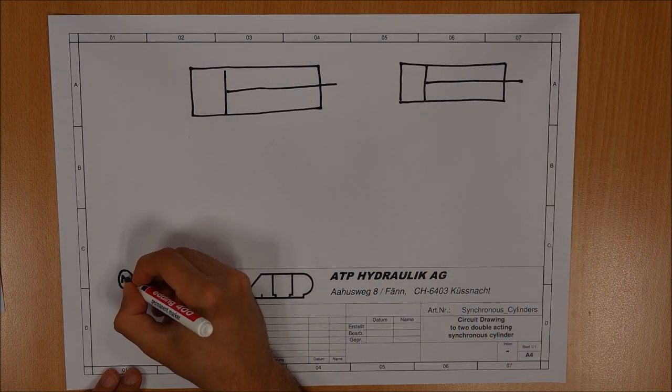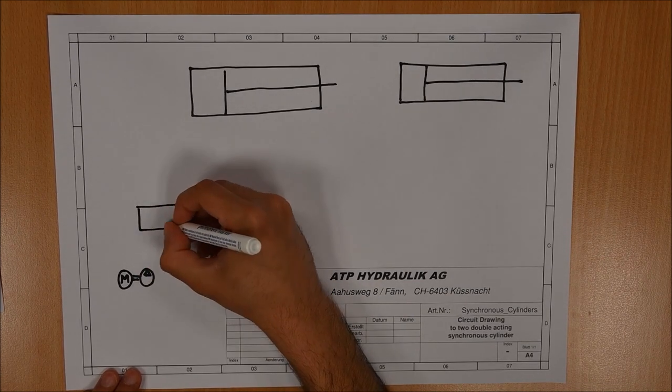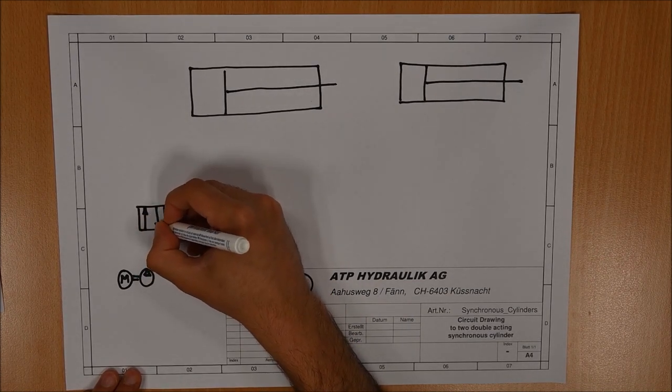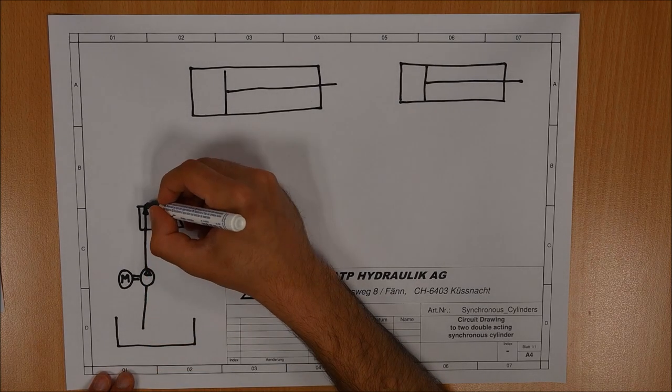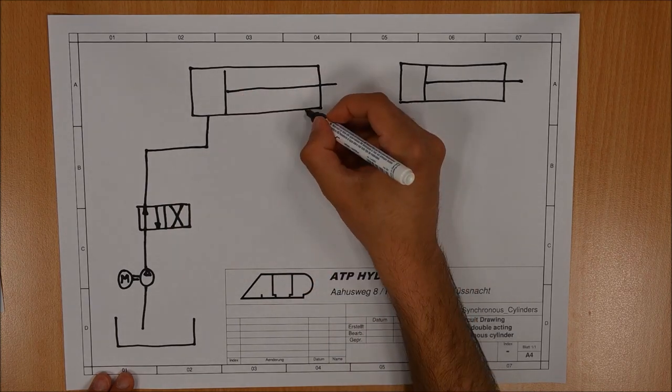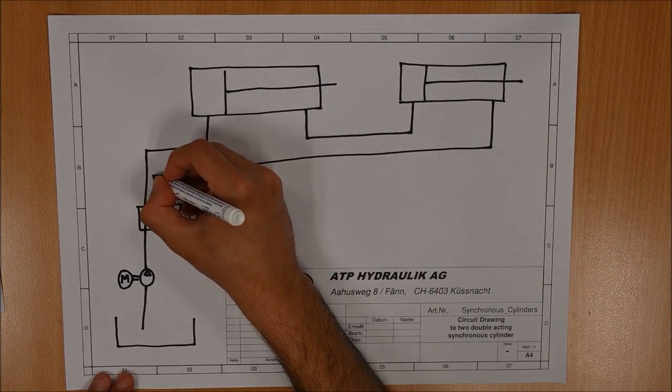The pump transports oil as usual through the deciding two-way valve into the piston side of cylinder number one. The rod side of cylinder number one is directly connected with the piston side of cylinder number two which has its rod side connected with the two-way valve again.